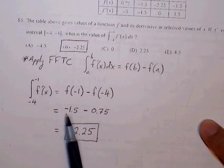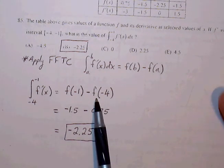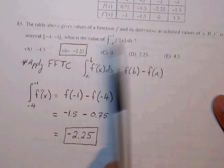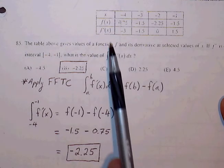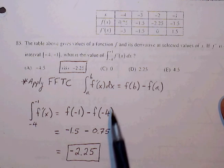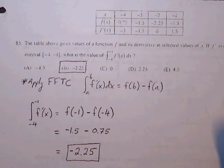So f of negative 1 is negative 1.5 by looking at the table of values there. And f of negative 4 is simply going to be 0.75. So we subtract those values and we get negative 2.25.